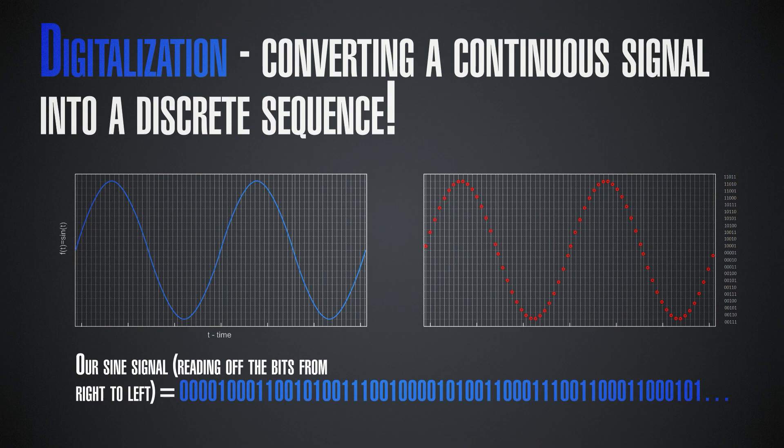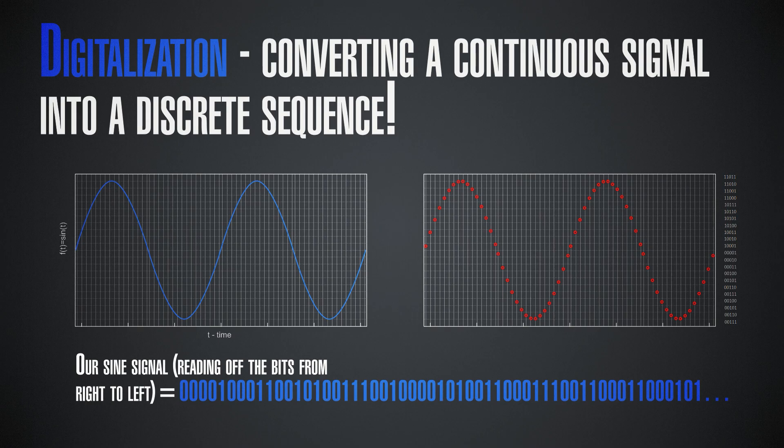Of course, you may argue: have we actually captured all of the information? This sine function as a continuous function carries a lot more information intuitively than what we can do by taking only discrete portions of it. So how can we be sure that once we send this sequence of zeros and ones, the receiver — sampling at the exact same speed — can reconstruct the full signal? They'll have only a finite number of points, but what about those in between?